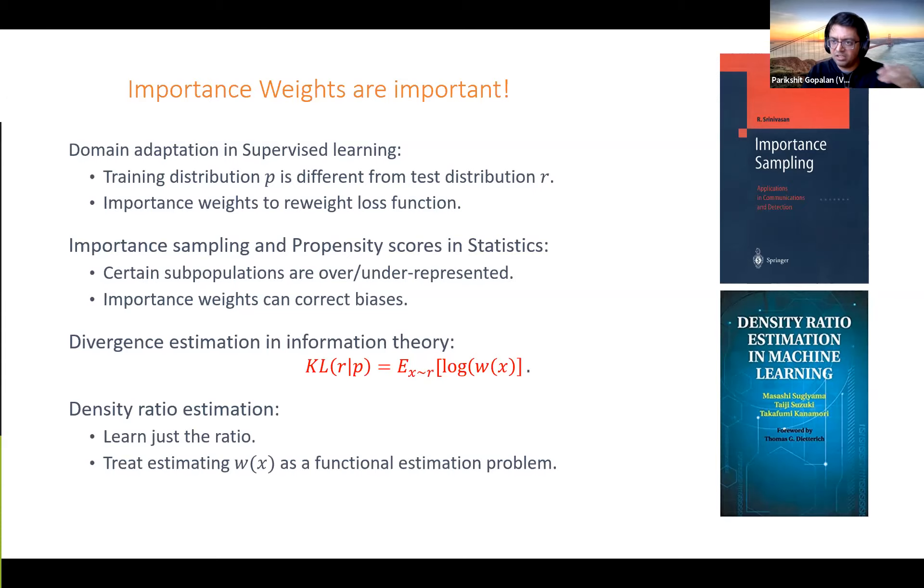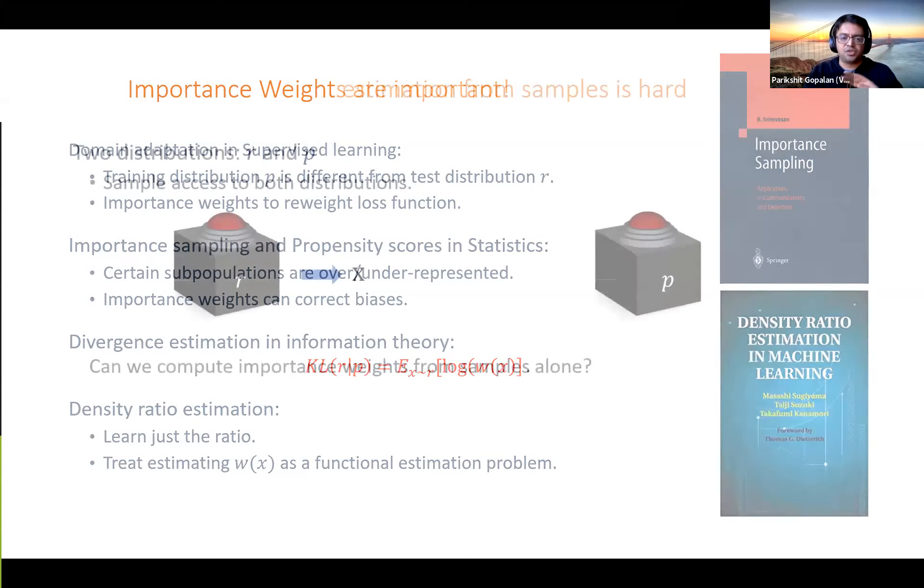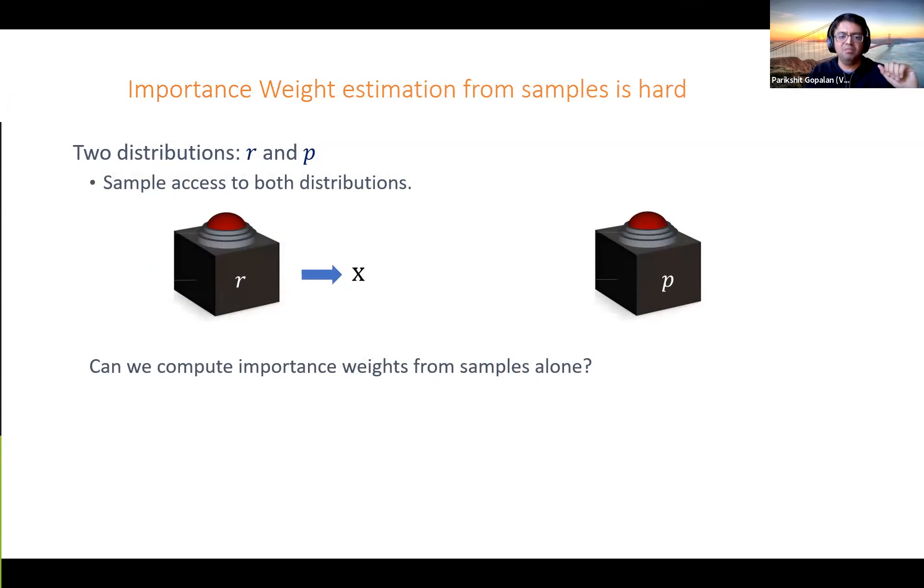Our work also fits in this framework, but most of the work here treats this as a function estimation problem - the importance weights are some function on the space, let's try and learn this function. So what could you do about this? Can you compute importance weights from samples alone? Getting point-wise approximations is pretty hopeless. You're just getting samples from these two distributions. If I tell you the importance weight of X is 20, if these are large support distributions, most likely you will not see X in either of your samples, so you're not going to be able to even verify a statement like this.